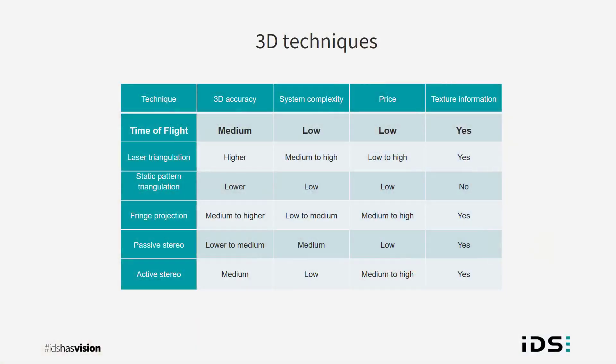For industrial vision, indirect time of flight is the method you will most likely see used, and time of flight in general is a less complex system compared to other 3D methods. It also often has lower system costs, at least when compared to the equivalent levels of accuracy and 3D quality of other methods. Our new time of flight camera, the Nyon, is a new product based on a new sensor from ONSEMI and offers many advantages not just over the other 3D techniques but also over other existing time of flight solutions.